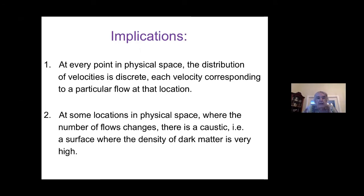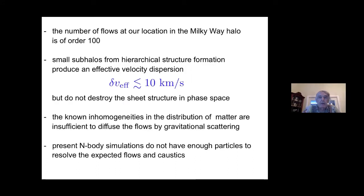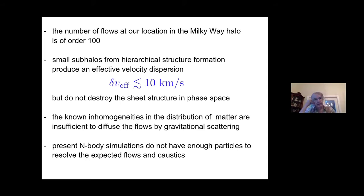At any physical point you must have a discrete velocity distribution, and you must have caustics where the number of flows changes. This is as rigorous a statement as any you can make about dark matter. How many flows are there? It depends on location in the halo, but at all locations the number of flows is of order 100 — that's the age of the universe divided by the oscillation time. In the Milky Way halo, the time to go around once is about 10^8 years; the age of the universe is about 10^10 years, giving a ratio of 100 flows.